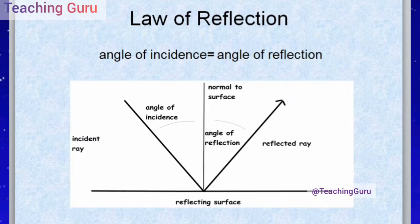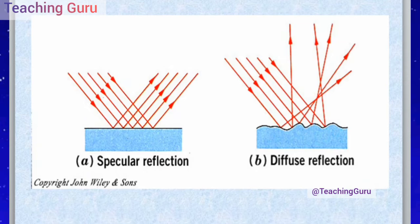Here is an example of specular and diffuse reflection. In specular reflection, the reflected rays are uniform — you can see this in the diagram. In diffuse reflection, the incident ray is uniform but the reflected rays go in different directions, and the angles between them are not equal.